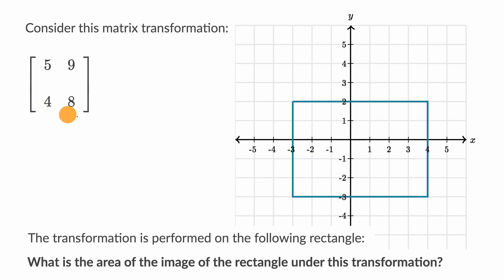So let's just do that. Let's evaluate the absolute value of the determinant here. So the absolute value of the determinant would be the absolute value of five times eight minus nine times four.